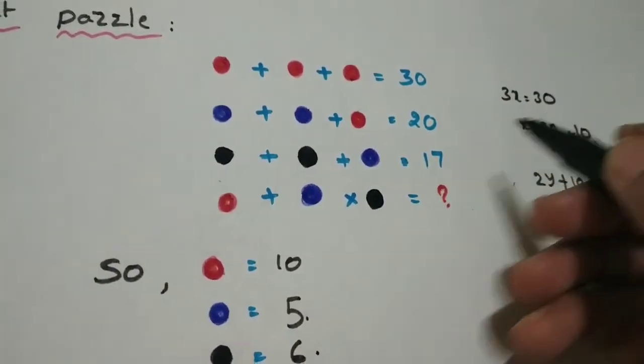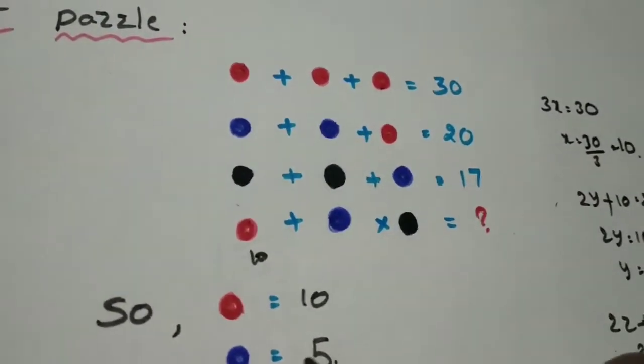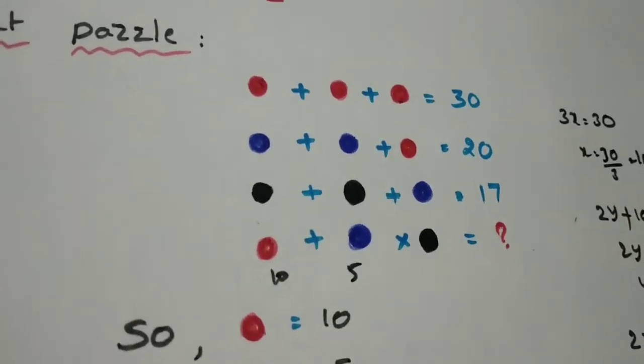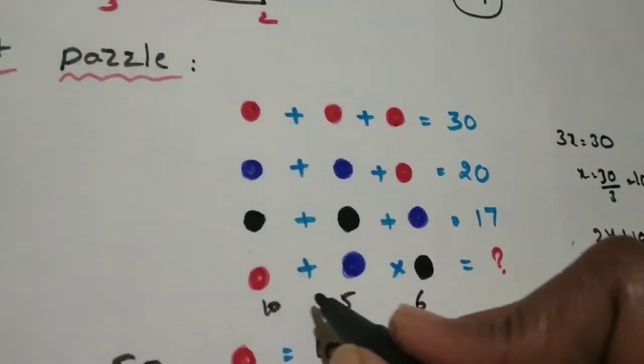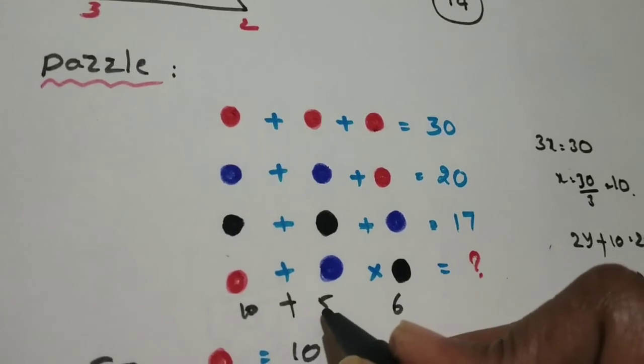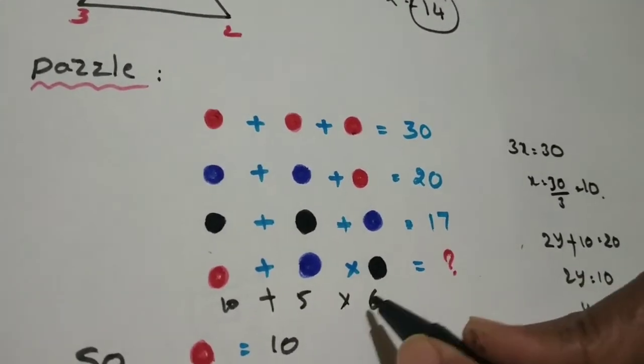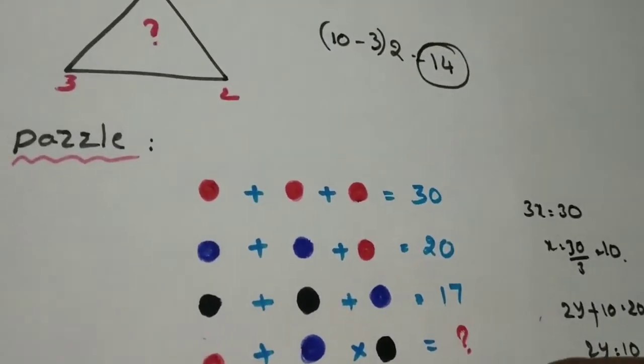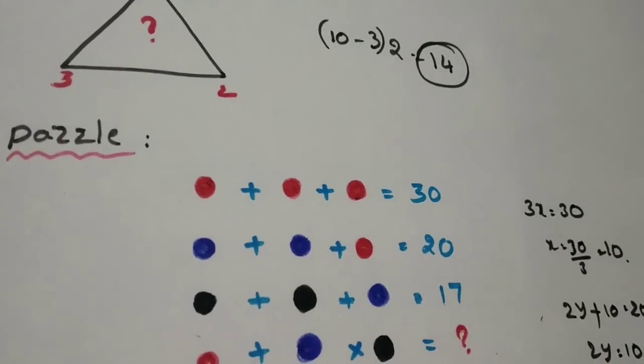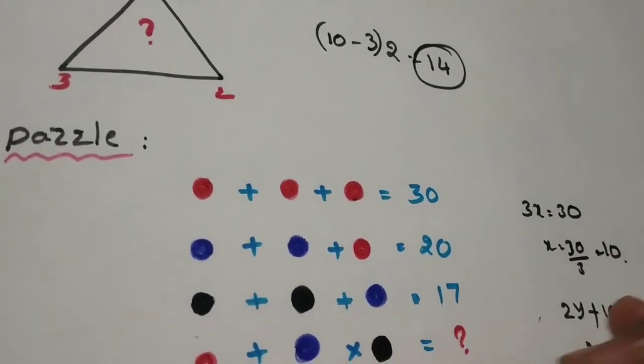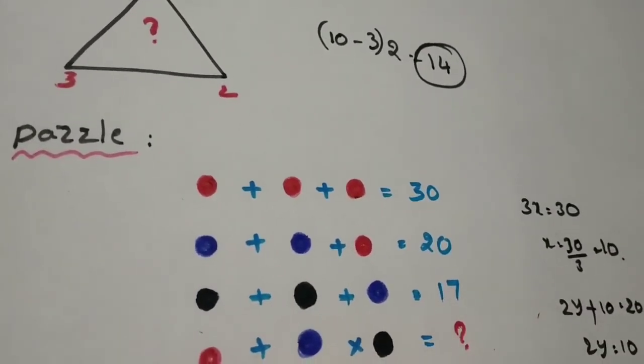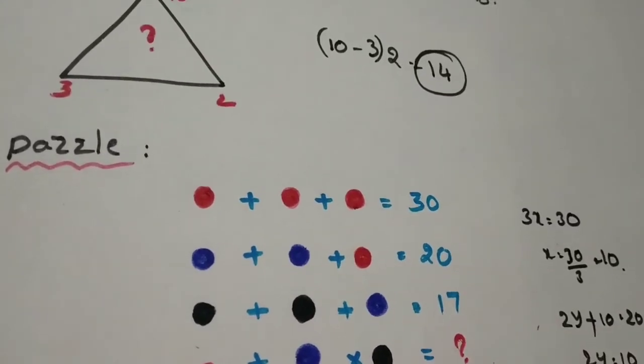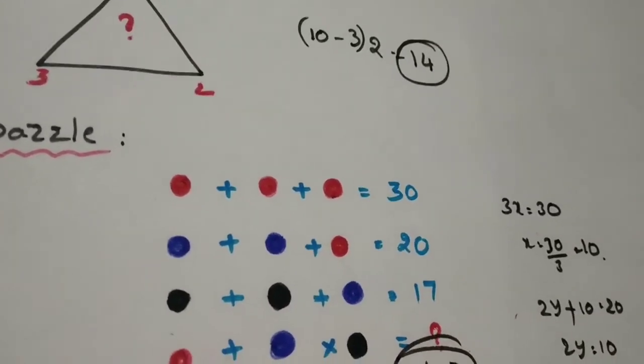Now find the answer: red dot plus blue dot plus blue dot plus black dot. Red dot is 10, blue dot is 5, black dot is 6. Observe the symbols - these two have to be plus and this has to be into (multiplication). So what is the answer for this one? First in BODMAS rule, you have to apply the multiplication. So 6 into 5 is 30 plus 10, so 40 is going to be the answer.